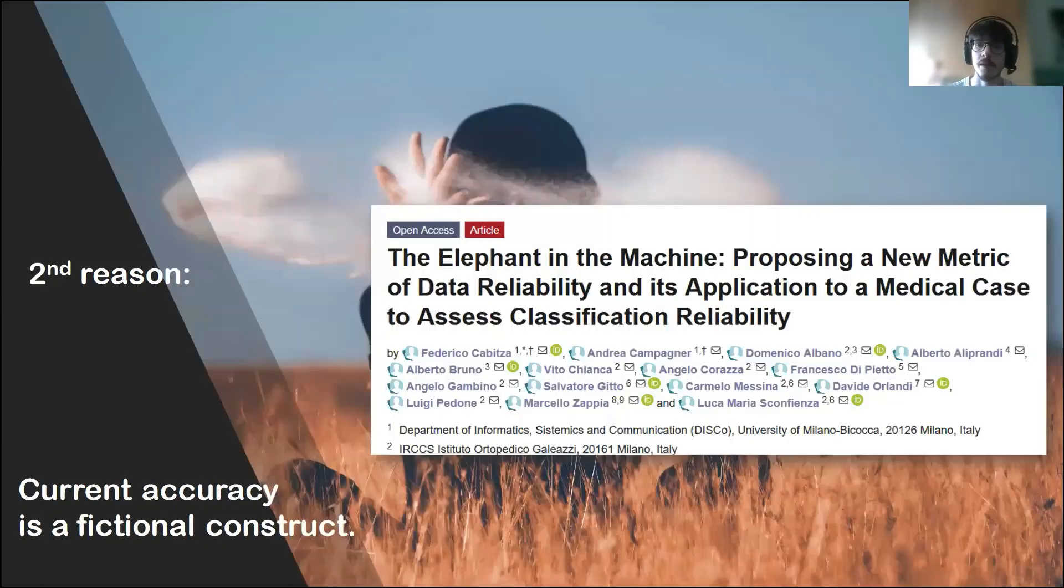The second problem is that current accuracy and the current accuracy matrix can be considered a fictional construct, because they do not take into account important biases and limitations of the kind of information that we use for evaluating systems.